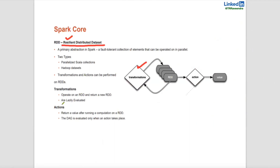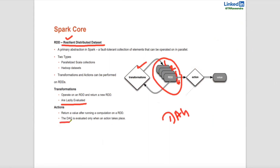Lazy execution means transformations are lazily evaluated. Whenever you apply a transformation it returns another RDD — RDD1, RDD2, RDD3, RDD4 — but all are lazy. Only metadata lineage is created and the DAG (Directed Acyclic Graph) is managed. Once you run an action, then only will all this back-end metadata execute and return a value. Until then, they are lazily executed.